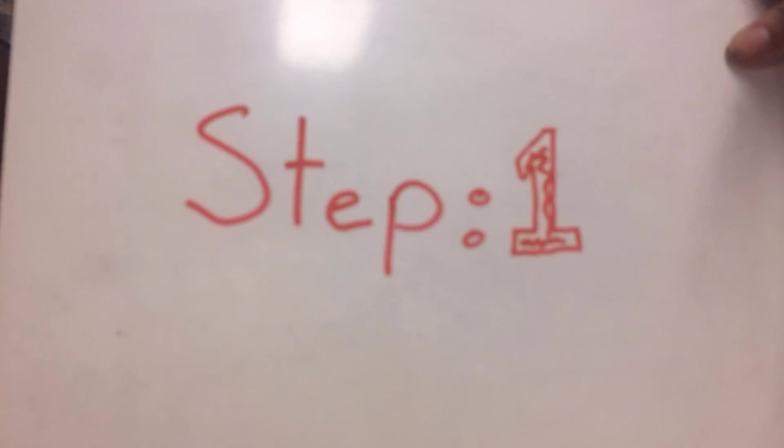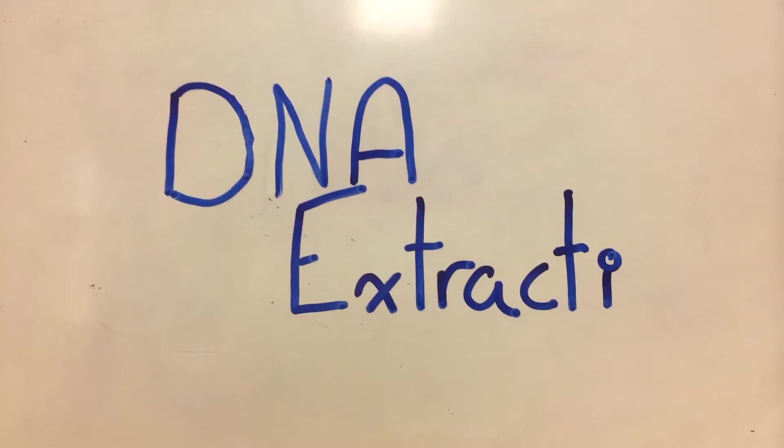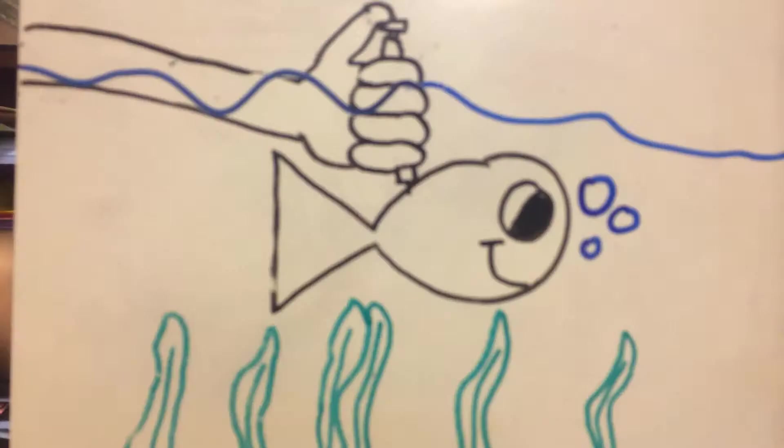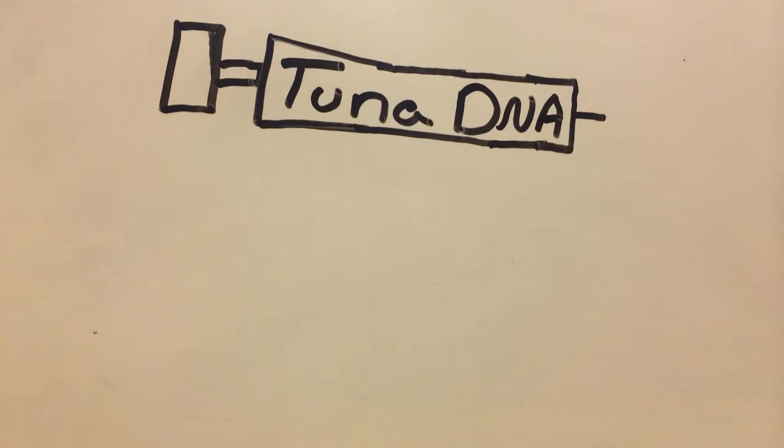Our first step is DNA extracting. This is when DNA is taken out of an organism. We just extracted the tuna's DNA.